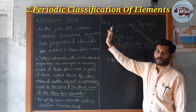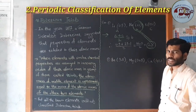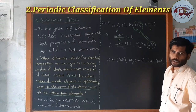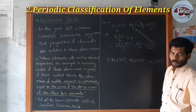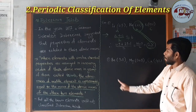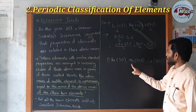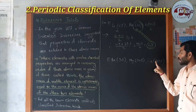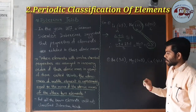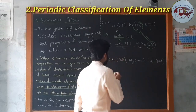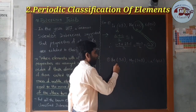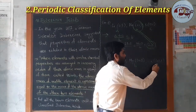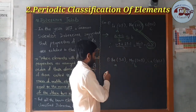Now the second example — you can work this out in your notebook. Beryllium has atomic mass 9, magnesium 24.3, and calcium 40.1. Suppose beryllium is A, magnesium is B, and calcium is C.